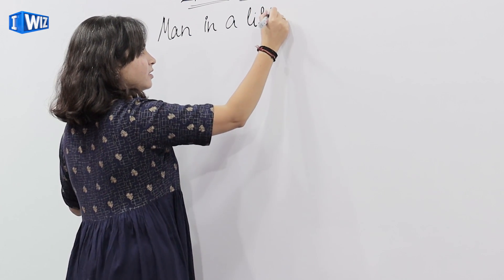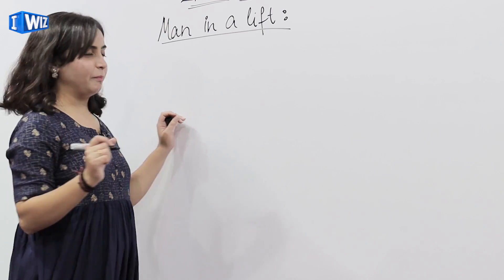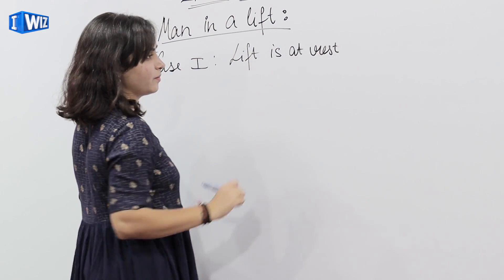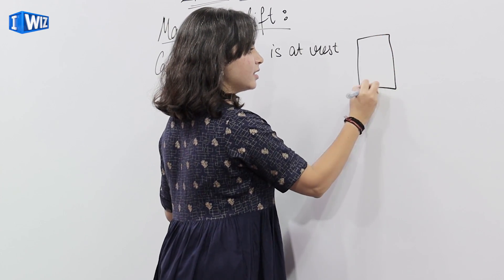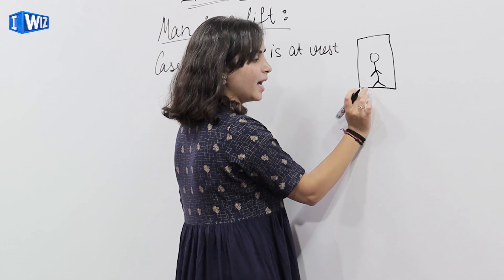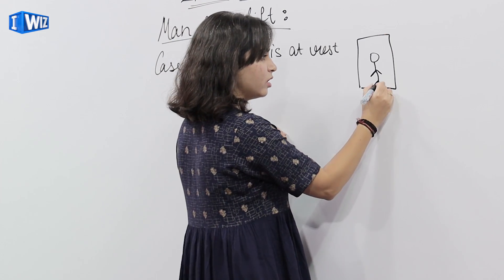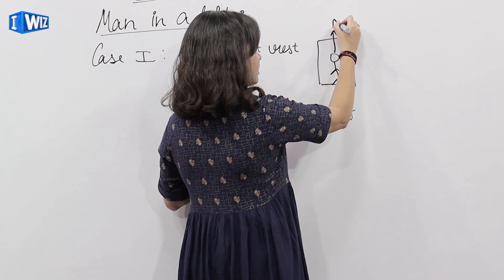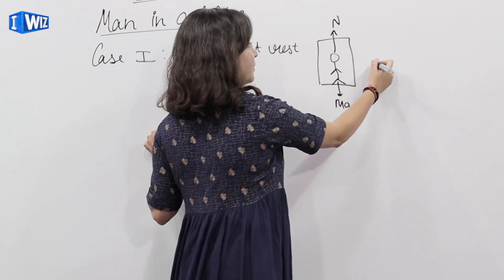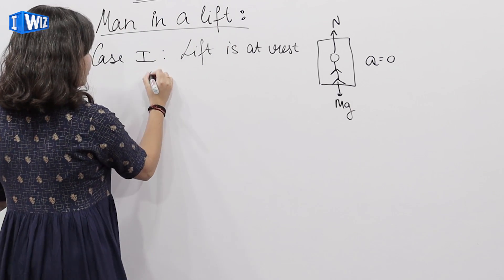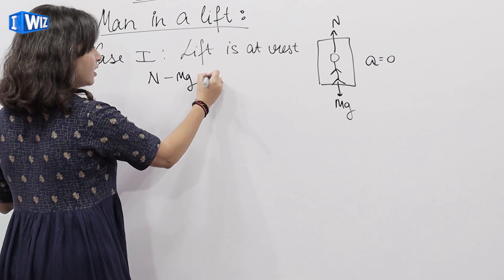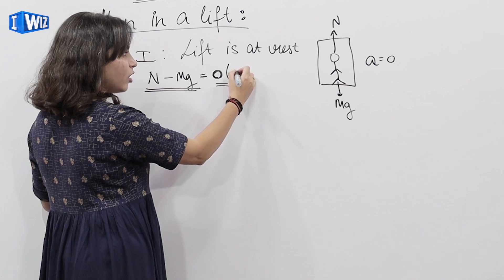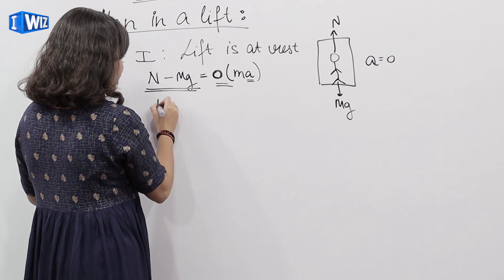Man in a lift. अब एक man है जो lift में है. Case 1 — lift is at rest. Consider this is a lift, lift में एक man है. अब man पर क्या-क्या force लग रही है — जो man का खुद का mass है वो MG. Man surface पर force लगा रहा है तो normal reaction — surface भी man पर कुछ force लगाएगा, say N. Lift rest पर है that means acceleration 0 होगी, therefore N minus MG is equals to 0, because force equals mass into acceleration and acceleration is 0.